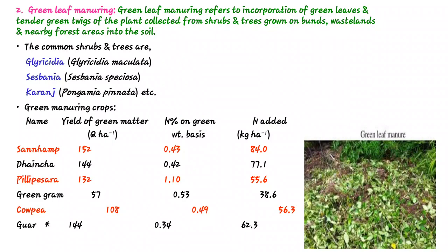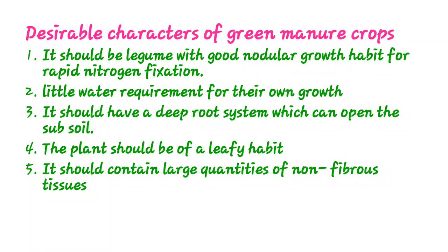Now see some desirable characters in green manure crops. The green manure crop should be a legume with good nodular growth habit for rapid nitrogen fixation. It should have little water requirement for growth and development and be capable of good stand on poor soils. It should also have a deep root system which can open the subsoil, allowing uptake of nutrients from the subsurface layer.